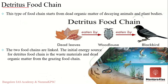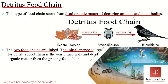The detritus food chain starts with dead and decaying matter, then moves up to consumers. For example, you may have dead leaves, then insects feeding on those leaves, then birds eating those insects. The key difference between the grazing and detritus food chains is the source of energy at the first level — primary producers versus dead and decaying matter. Even so, the two chains are linked: the initial source for the detritus food chain is the waste materials and dead organic matter from the grazing food chain.